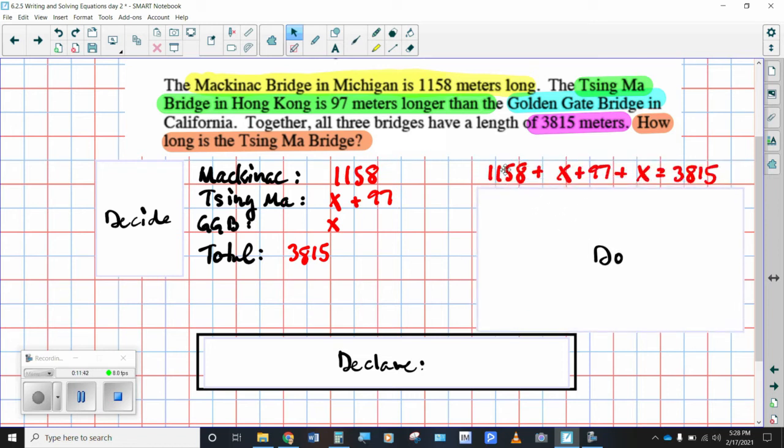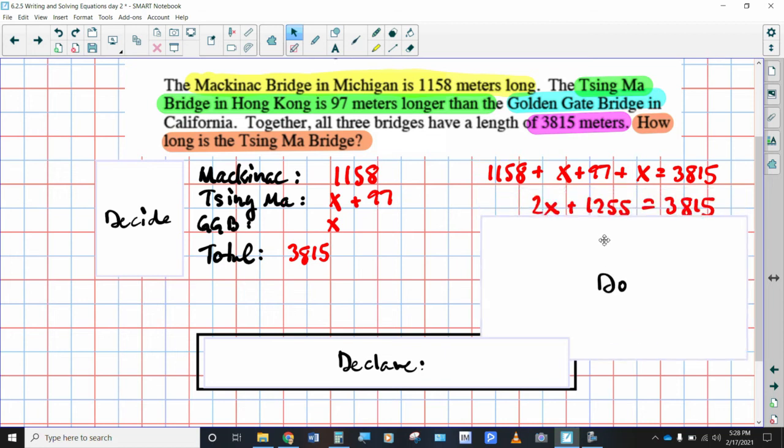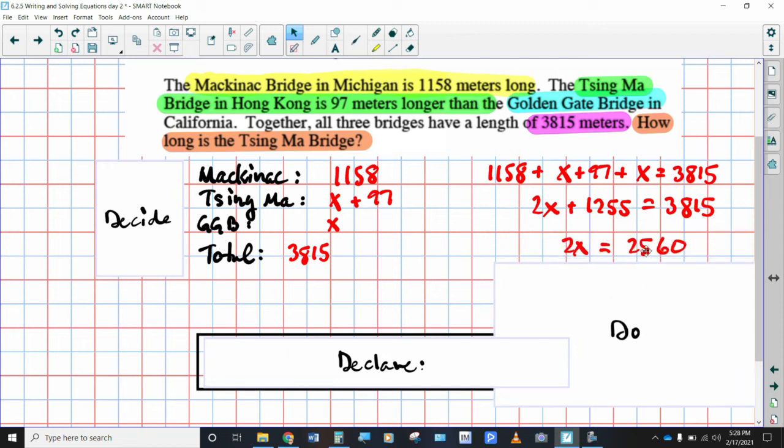So when we set this up, Mackinac Bridge plus the Tsing Ma Bridge plus the Golden Gate Bridge is equal to 3815 meters if you were to be able to put them all end to end. So we combine like terms. Looks like we have two X's. And then when you add 1158 and 97, you get 1255. So 2X plus 1255 has to equal 3815. Now we've got to get our two X's alone. So let's subtract 1255 from each side. And that gives you two X's must have been equal to 2560.